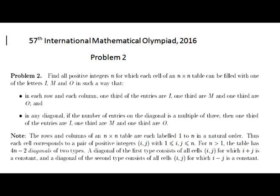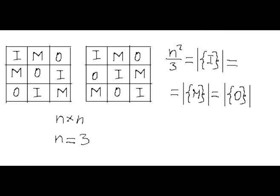The note at the bottom explains the formulas for coordinates of cells in this table that form such diagonals. The number of letters in all cells of a table is N squared, and the number of letters I, M, and O each equal N squared divided by 3. The first obvious restriction for N is that it must be divisible by 3.